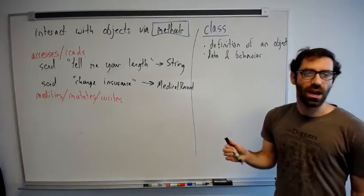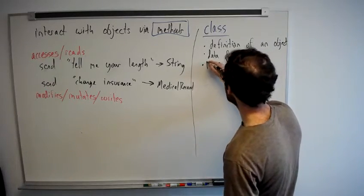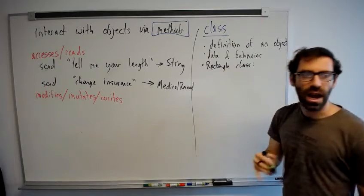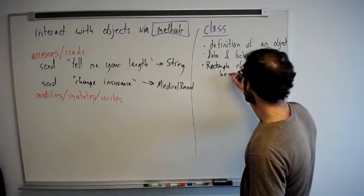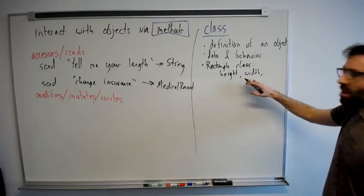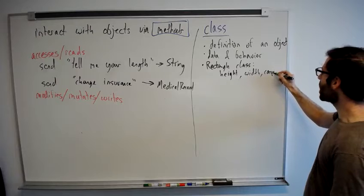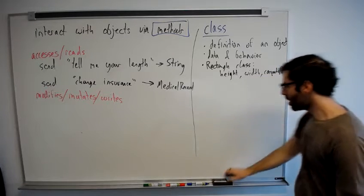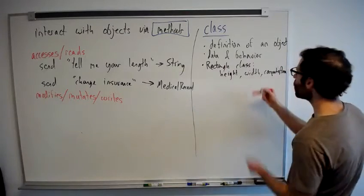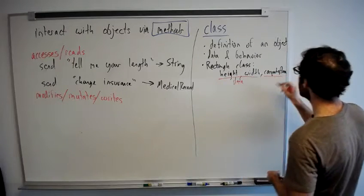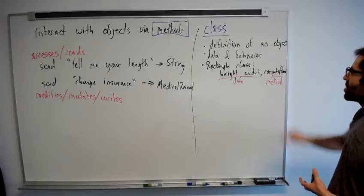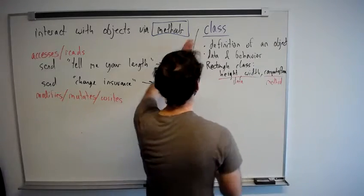For example, a Rectangle class would have both a height and a width. This would be the data that defines a rectangle. And then it might have a compute area method that we could call on objects of this class in order to get the area.